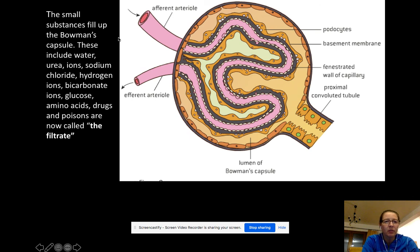And so the small substances, here's that list that can be pushed out: urea, ions, sodium chloride, hydrogen ions, bicarbonate ions, glucose, amino acids, drugs, and poisons, and all of that gets pushed into here. And that is called the filtrate.